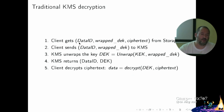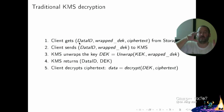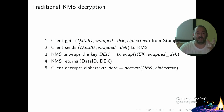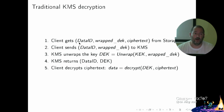Decryption is the opposite. The client gets the encrypted data with the encrypted key, takes the encrypted key, sends it to the KMS. The KMS checks authorization, uses the KEK to decrypt the DEK, and sends the DEK back to the client, who can now decrypt the file. This is really straightforward — basically what PGP does, but with the key encryption key handled separately, probably not even on the same hardware.